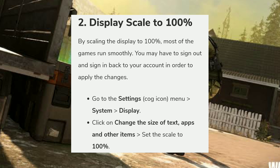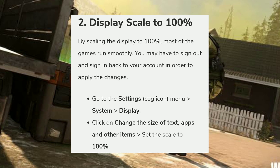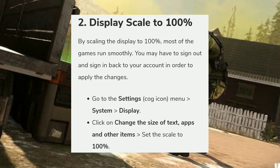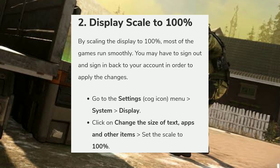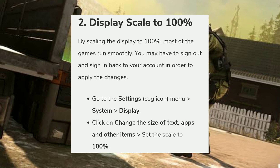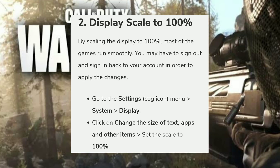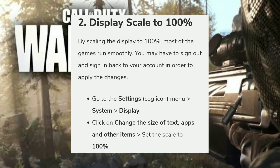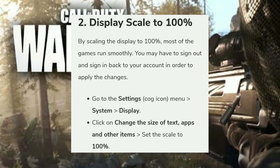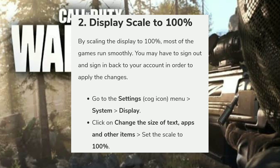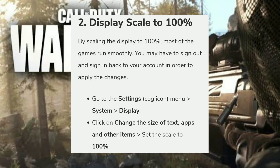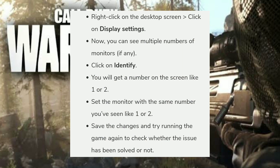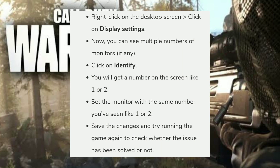The second fix is to set the display scale to 100%. By scaling the display to 100%, most games run smoothly. You may need to sign out and sign back in to your account to apply the changes. To do so, go to Settings, then System, then Display, click on 'Change the size of text and other items', and set the scale to 100%.